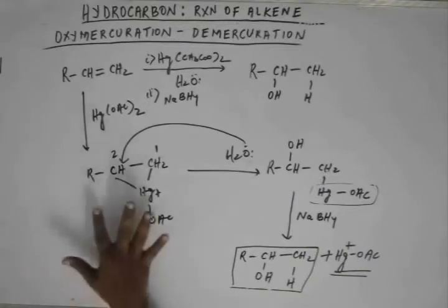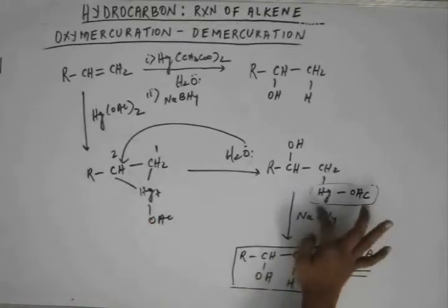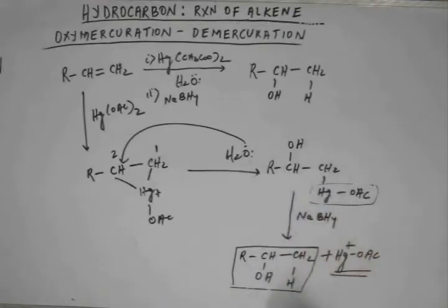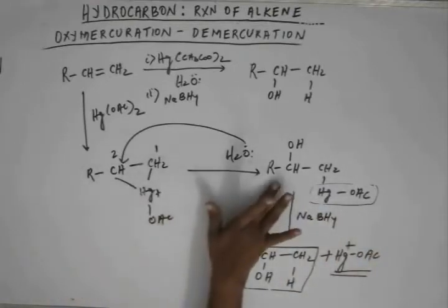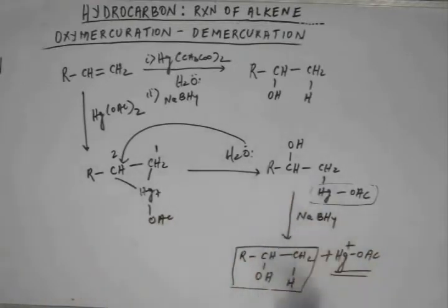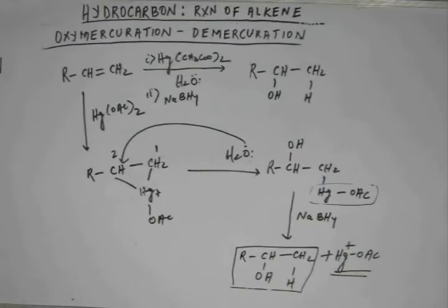This is oxymercuration — and this part of removal of the mercuric ion is demercuration. First we have oxymercuration and then we have demercuration, which gives us this alcohol. Hence, the name of the reaction is oxymercuration-demercuration. Let's study the next reaction and then we will solve some problems.